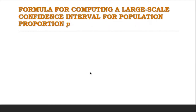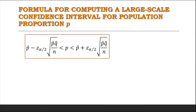The formula for computing the large-sample confidence interval for population proportion p is: p-hat minus z sub alpha over 2 times the square root of p-hat times q-hat all over n, less than p, less than p-hat plus z sub alpha over 2 times the square root of p-hat times q-hat all over n.